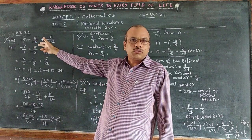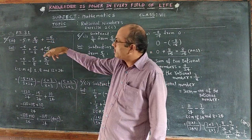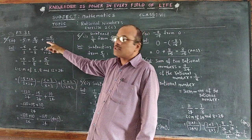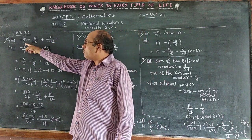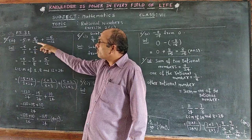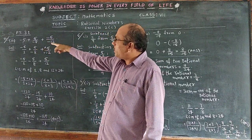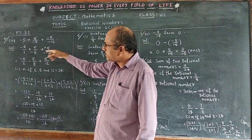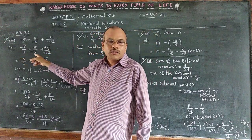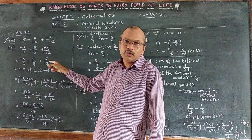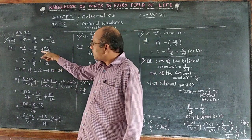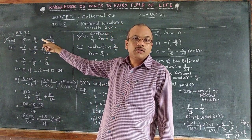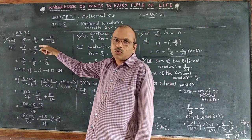Question 3, third bit: we have to simplify as per the signs shown. The expression is minus 5 plus 5 by minus 8, plus minus 5 by minus 12. Now let us see the way of simplifying them. Minus 5 has no denominator given, so the denominator is taken as 1.